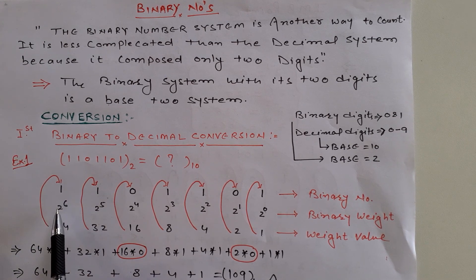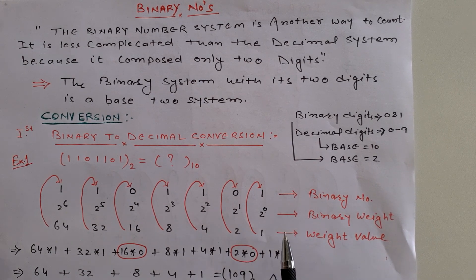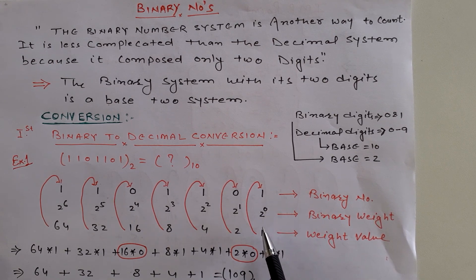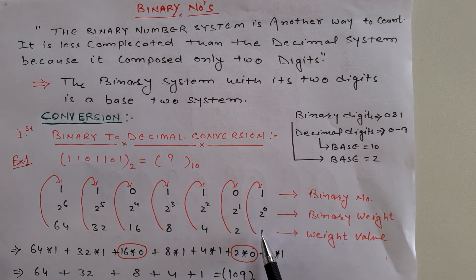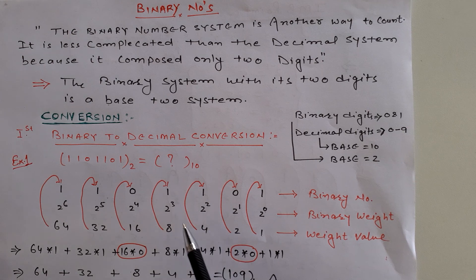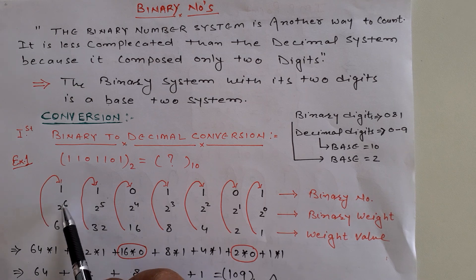According to the binary weight from the left, we define the binary weight. 2 to the power 0 is 1, 2 to the power 1 is 2, 2 to the power 2 is 4, 2 to the power 3 is 8, 2 to the power 4 is 16, 2 to the power 5 is 32, 2 to the power 6 is 64.